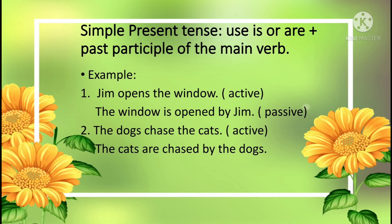When you have the simple present tense, use is or are plus the past participle of the verb. For example: Jim opens the window — the window is opened by Jim. The dogs chase the cats — the cats are chased by the dogs. The tense does not change, but you are using the past participle verb: opened and chased.